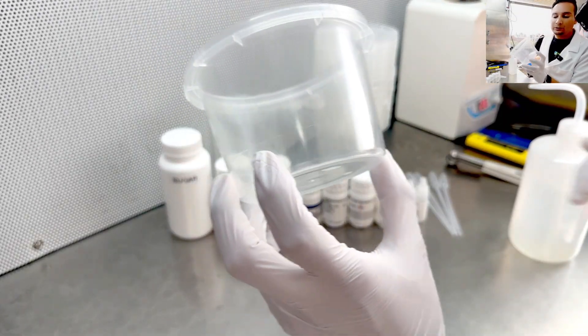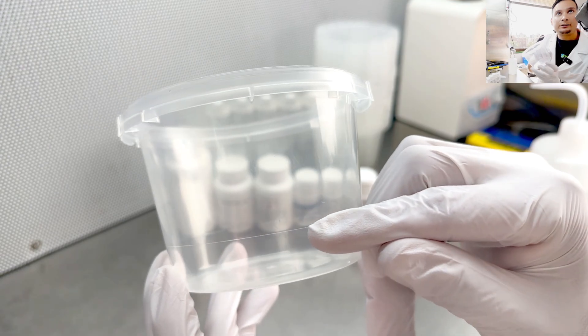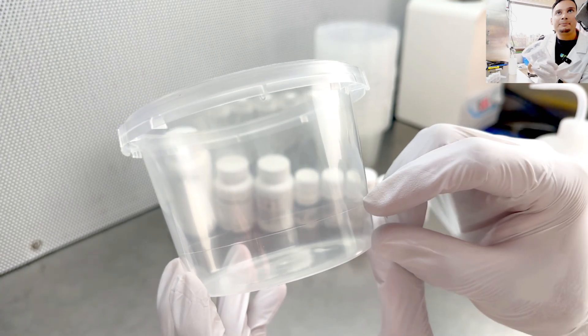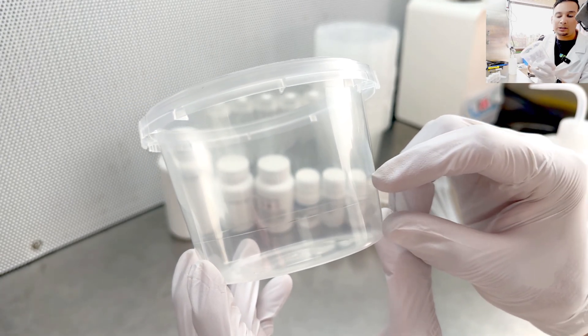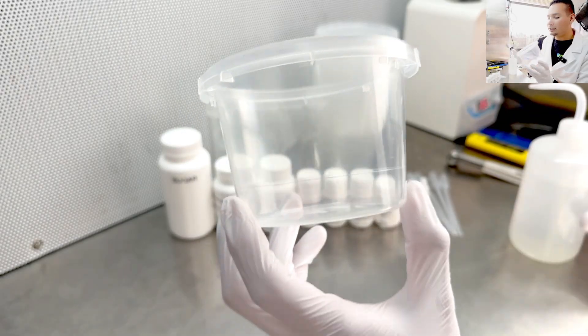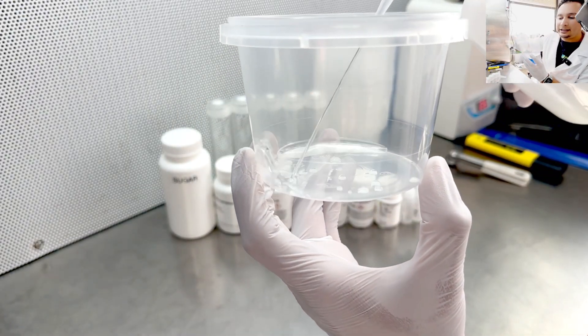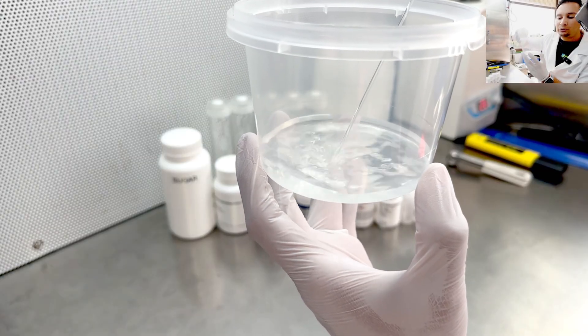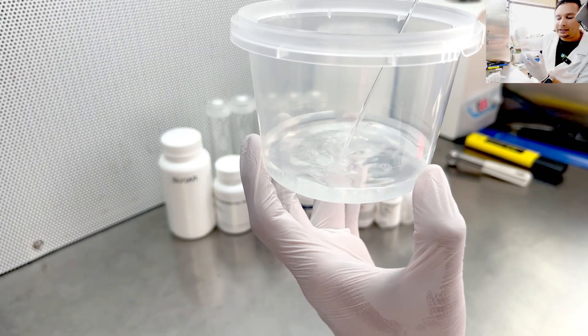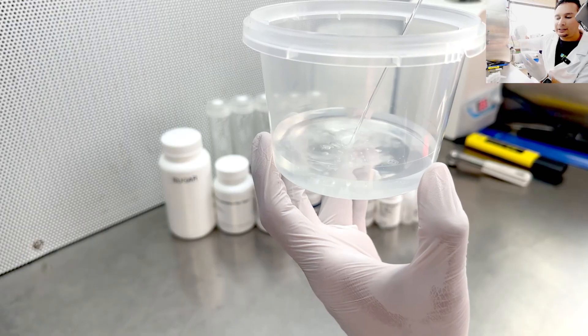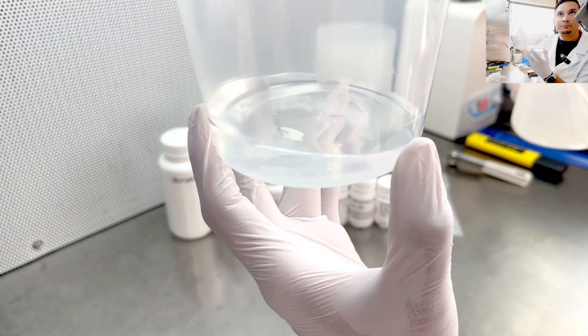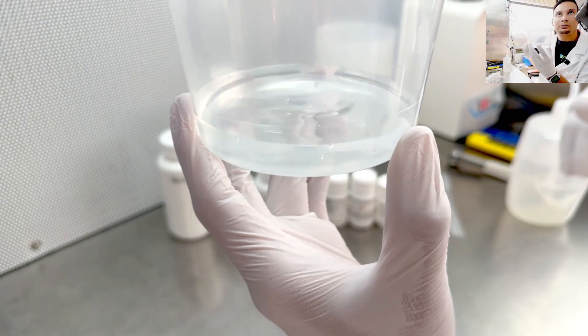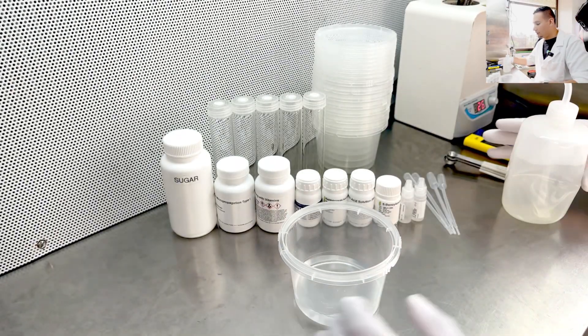The first thing is to add water to your container. So you see this line right here? This is how much media there will be for each container. I'm going to add water to my container. I'm not going to fill it all the way to that line as I want to be adding my ingredients, but that's going to be my final volume. So that's a good starting point.